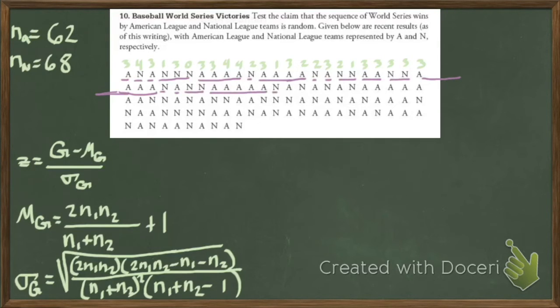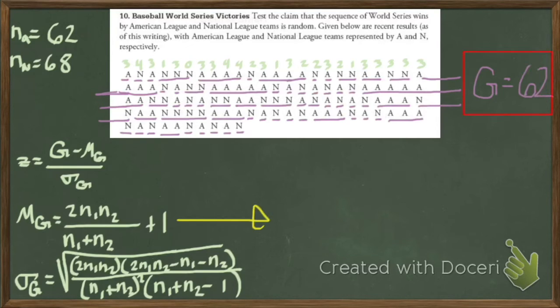I was counting the number of breaks and the number of runs. Notice my line that goes off the page, that run continues on. I was counting sideways so that I could get my G. That's my big G, because that's the number of runs. How many? 62.